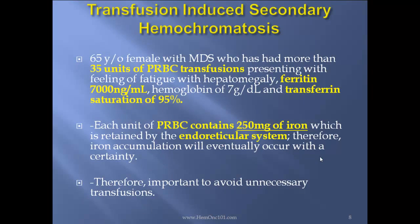Transfusion-induced secondary hemochromatosis case report: A 65-year-old female with myelodysplastic syndrome who has had more than 35 units of packed RBC transfusions, presenting with fatigue and hepatomegaly, ferritin 7000, hemoglobin of 7, and transferrin saturation of 95%. Remember, each unit of packed RBCs contains 250 milligrams of iron, which is retained by the reticuloendothelial system. Therefore, iron accumulation will eventually occur with certainty, and it is important to avoid unnecessary transfusions.